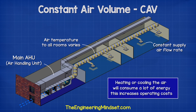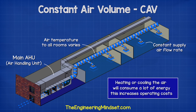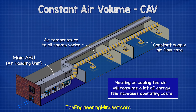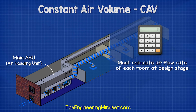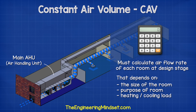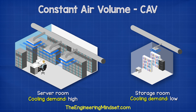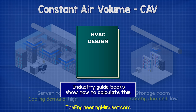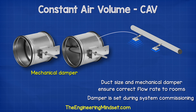Heating or cooling the air does consume a lot of energy and this increases the operating costs of the building. The volume flow rate of the entire system and therefore each room is kept constant. We have to calculate how much air each room will receive during the design phase. That depends on the size of the room as well as the purpose or what's happening inside each room. For example, a server room is going to require far more cooling than just a storeroom. There are industry guides available which will tell you how to calculate this. Each branch has a mechanical damper which is manually adjusted during commissioning to ensure the correct air flow rate as per design.